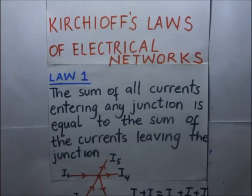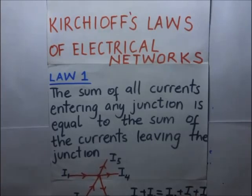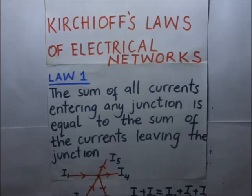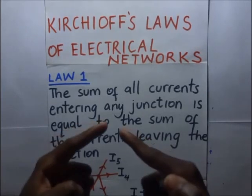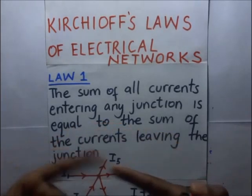The first law of electrical networks states that the sum of all currents entering any junction is equal to the sum of the currents leaving the junction. By junction we mean a place where wires are connecting — where wires are meeting.